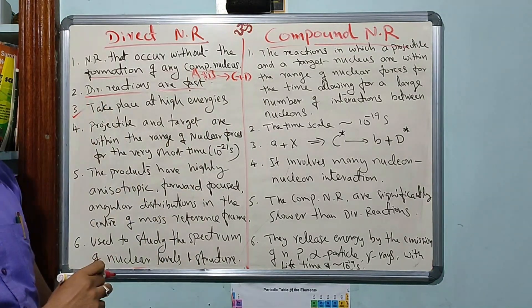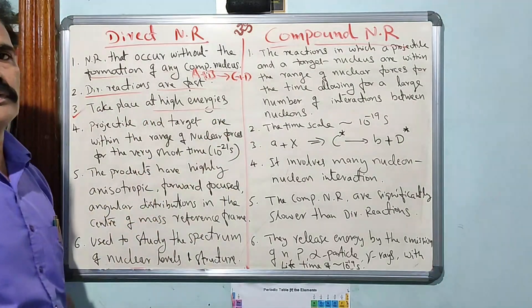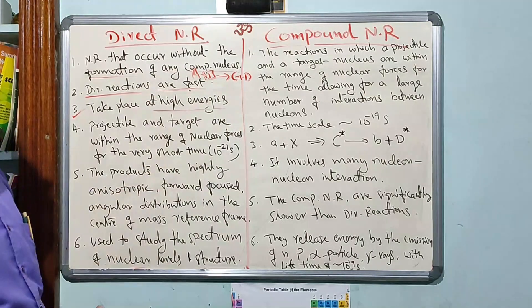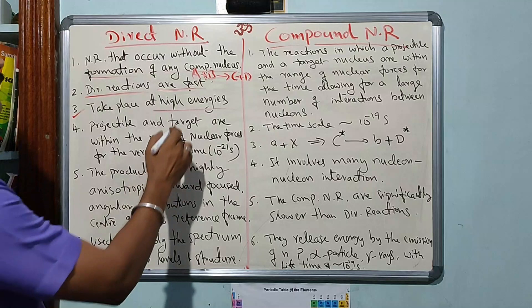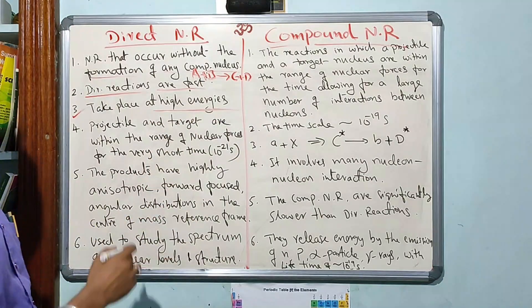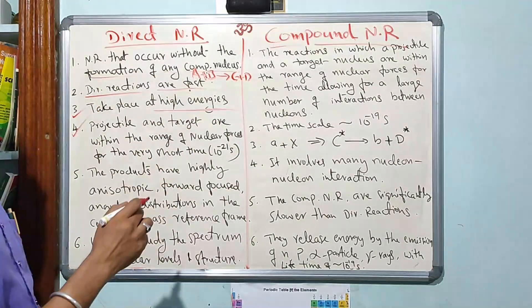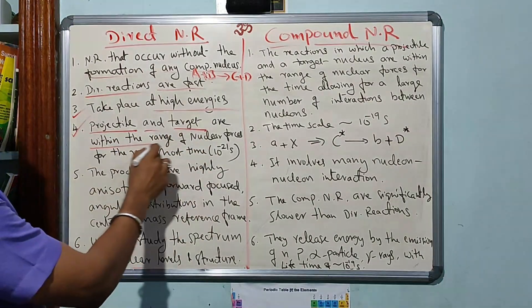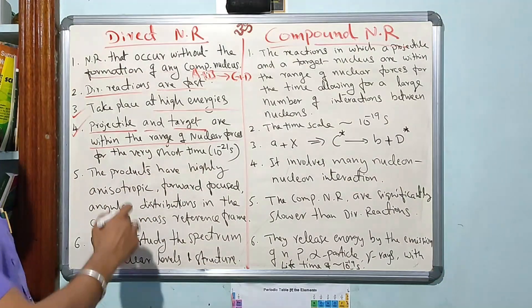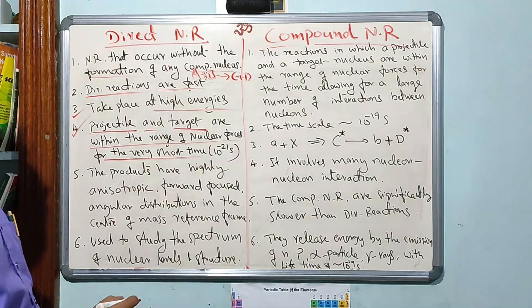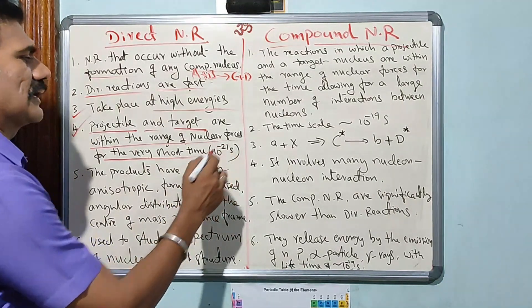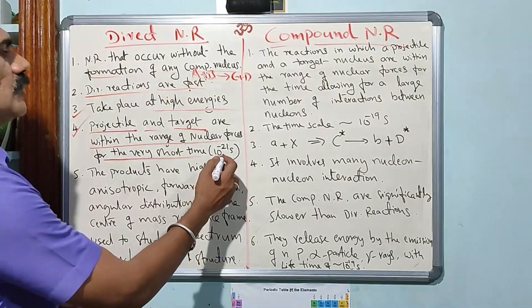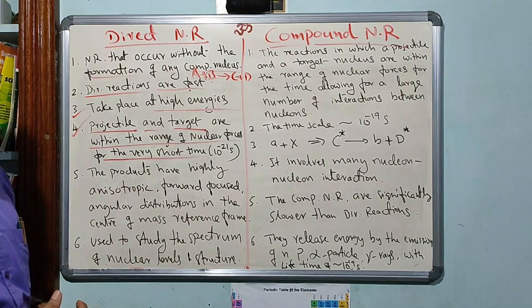The third point is they take place at high energies. At low energies, it is not possible to get the products, so direct nuclear reactions always occur at very high energies. The incident projectile and the target are both within the range of nuclear forces, meaning within a short interval of 10 to the power of minus 21 seconds they should interact and give the products. The entire nuclear reaction happens on the order of 10 to the power of minus 21 seconds.